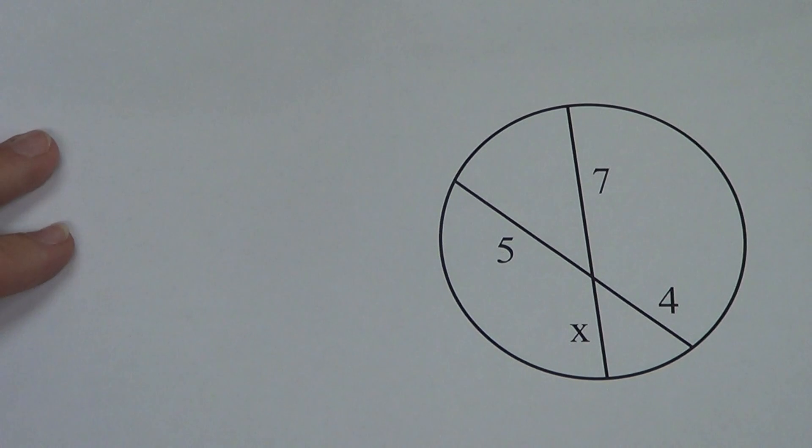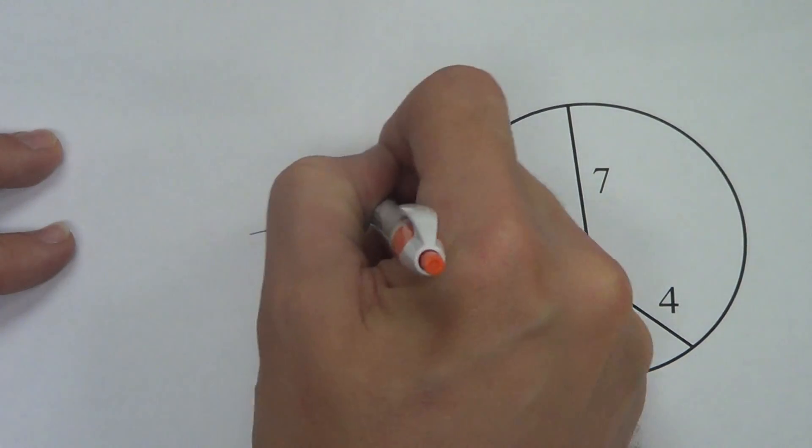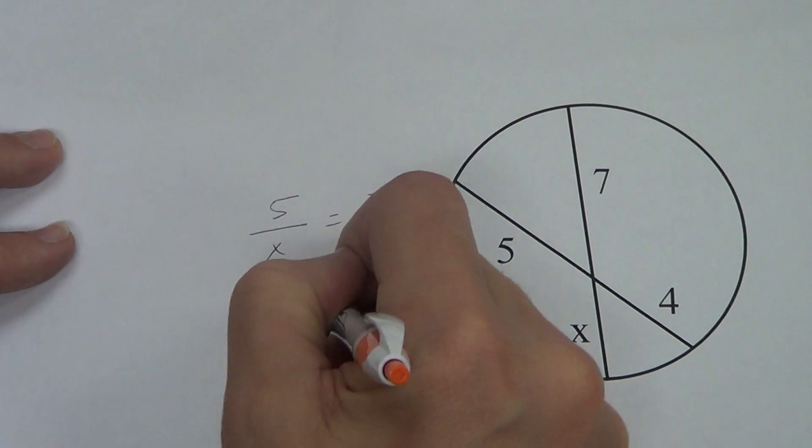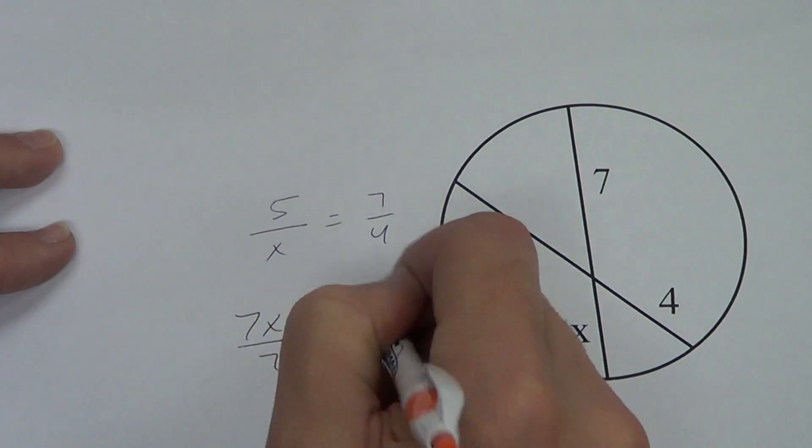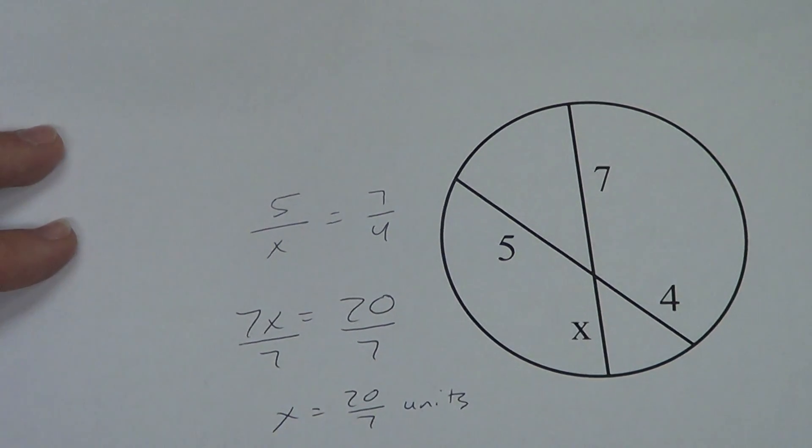We're going to set up our proportion here. We can set it up as long as we're consistent. So 5 over x, 7 over 4. We can do 5 over 7 and x over 4. Do not do 5 over 4 equals 7 over x. So I'm going to go 5 over x equals 7 over 4. I'm going to cross multiply, 7x equals 20. Divide. That does not reduce, so I'm going to leave it alone and label it, and we're done.